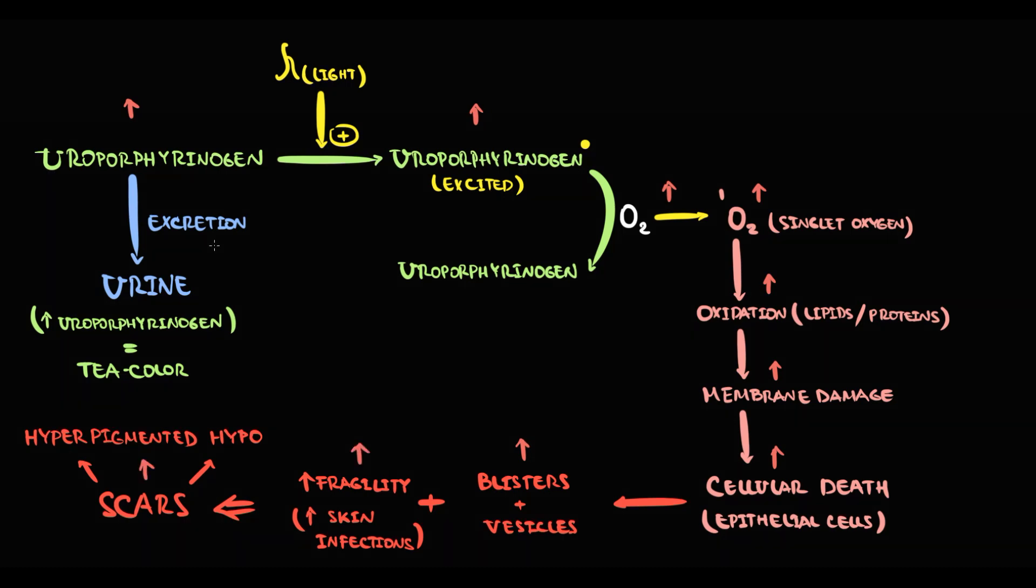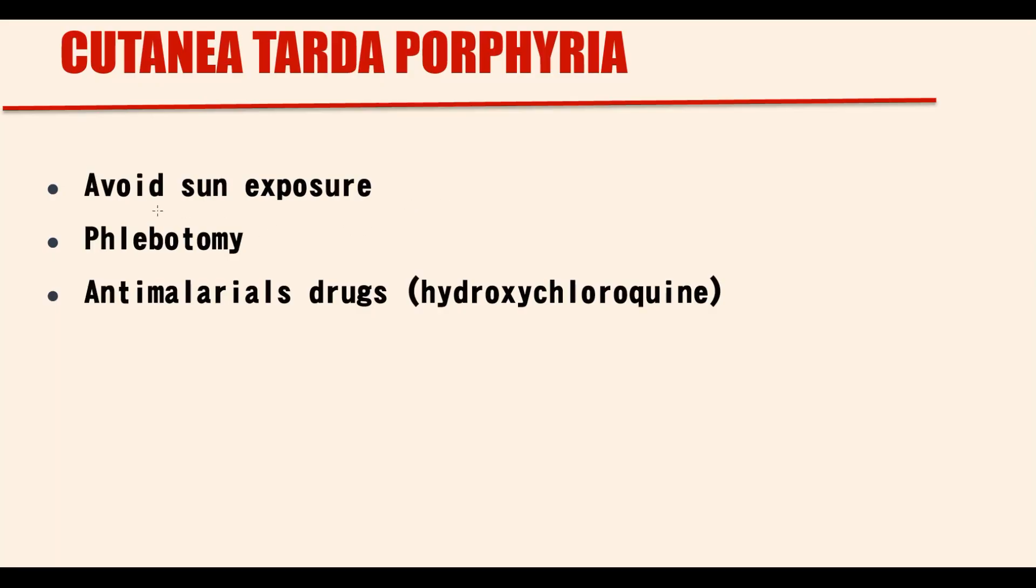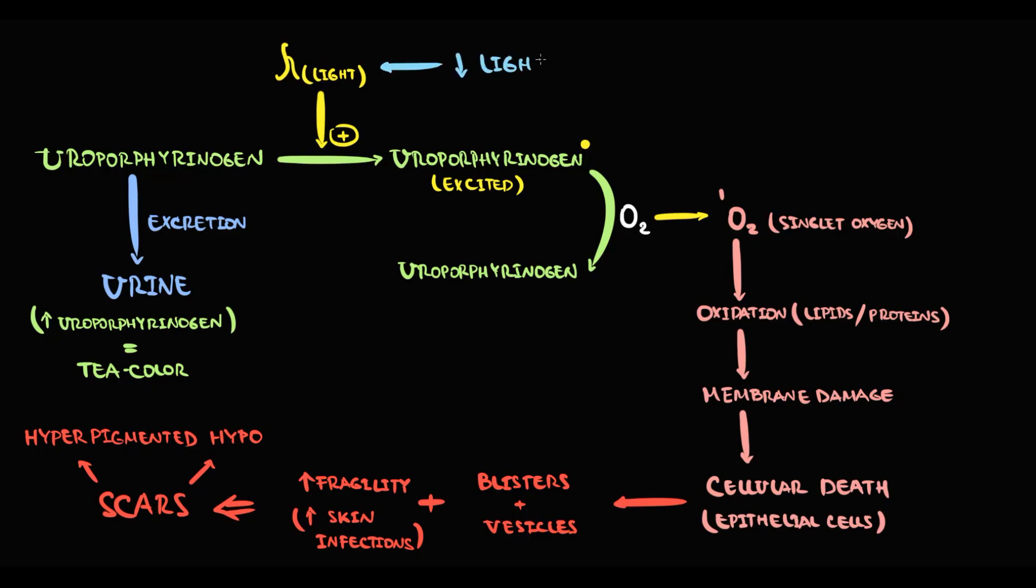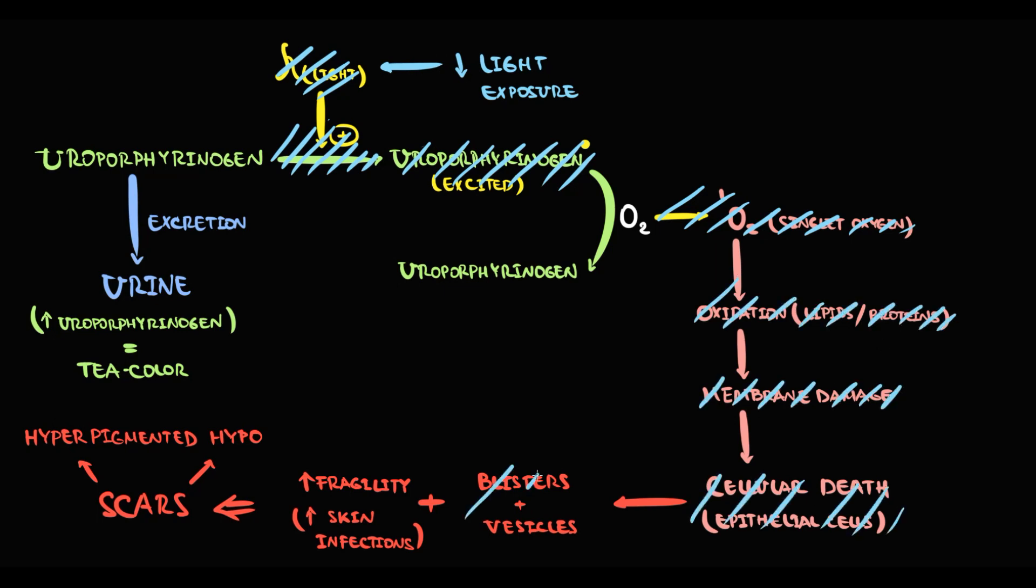And also, the higher will be the excretion of uroporphyrinogen into the urine. The major recommendation to the patients is sun avoidance. Obviously, with decreasing light exposure, the production of singlet oxygen decreases. And with decreasing singlet oxygen, potentially, oxidative damage will decrease. And thereby, the severity of clinical symptoms will decrease.